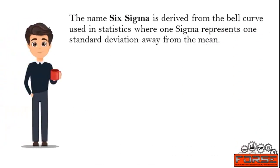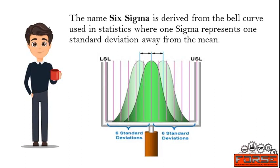Why only Six Sigma? The name Six Sigma is derived from the bell curve used in statistics, where One Sigma represents one standard deviation away from the mean. The more the number of standard deviations between the process average and acceptable process limits, the less likely that the process performs beyond the acceptable process limits, thereby decreasing the chances of causing a defect. This is why a Six Sigma process performs better than One, Two, Three, Four, or Five Sigma processes. Seven or more Sigma processes are even better, but the cost to achieve it is way more. LSL and USL stand for Lower Specification Limit and Upper Specification Limit, respectively. Specification limits are derived from customer requirements and specify the minimum and maximum acceptable limits of a process.